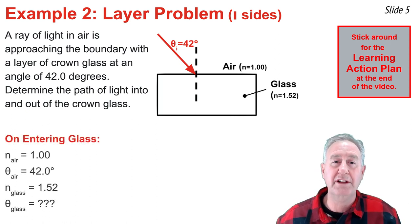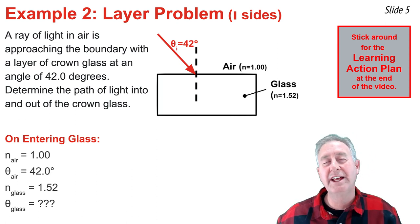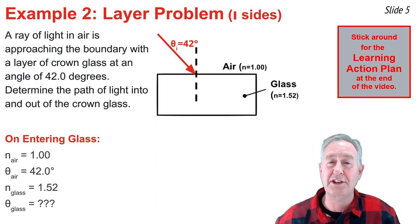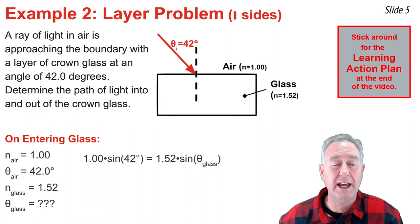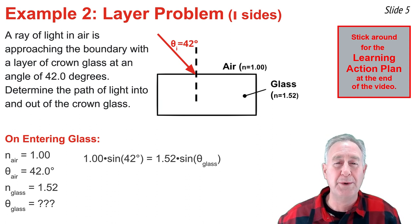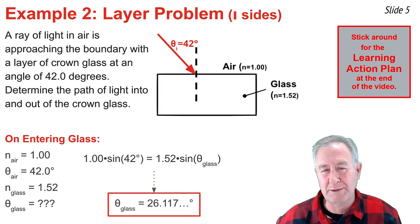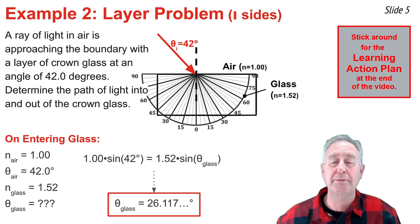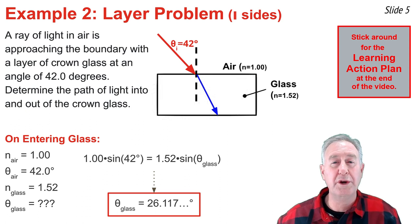At that first boundary, as light enters the glass, I write down what I know: the index of refraction of air, the index of refraction of glass, and the angle in the air, 42.0 degrees. I substitute these values into the Snell's Law equation to solve for the angle in the glass at the entry point. After evaluating the left side and taking the inverse sine, I get 26.117 degrees. I lay a protractor down, measure out about 26 degrees, and draw my refracted ray.